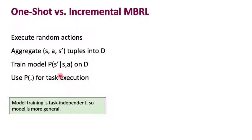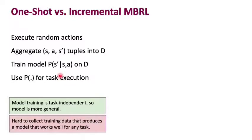Now, one good thing about this is that there was nothing about the process of aggregating the (s, a, s') tuples and executing random actions that were specific to the task that we eventually want to execute. The flip side is that it's actually really hard to collect good training data that would produce a model that would work well for any task. This style of model-based reinforcement learning is called one-shot model learning, where you only have one shot at collecting data and training a model.